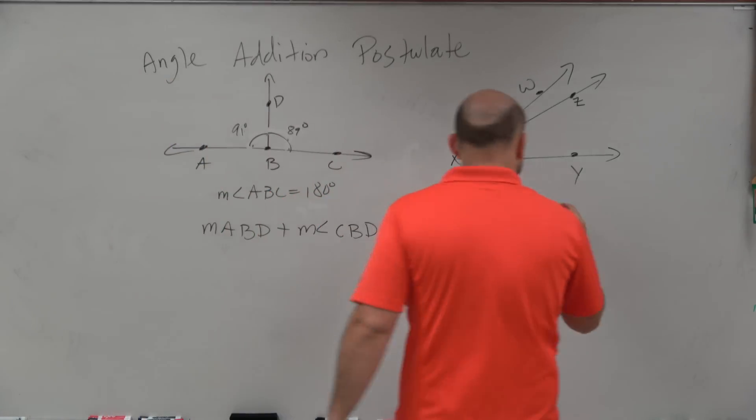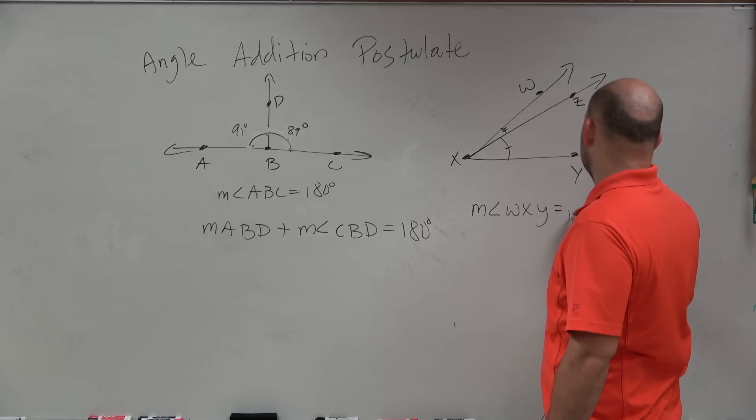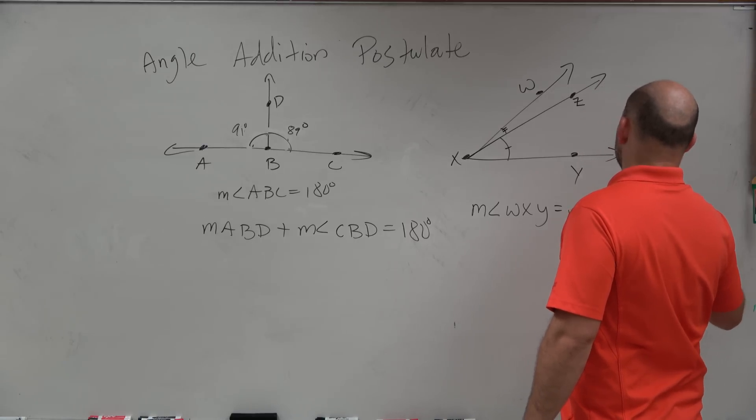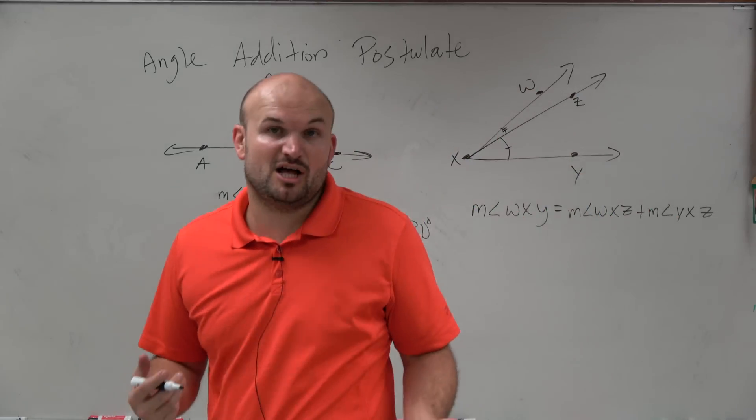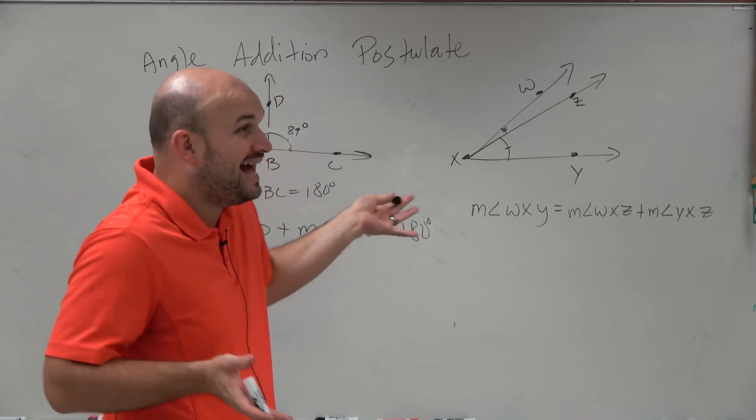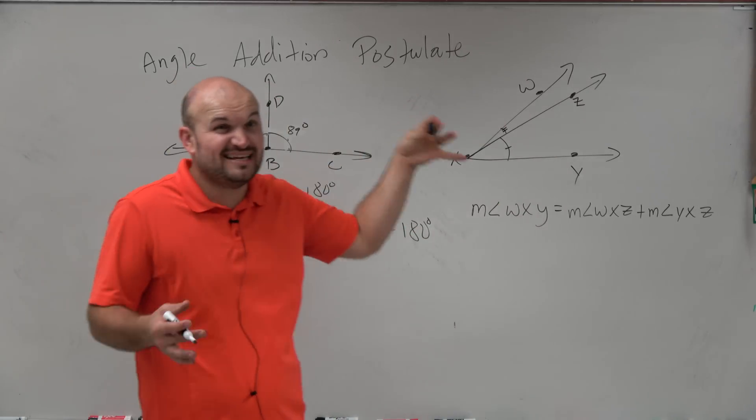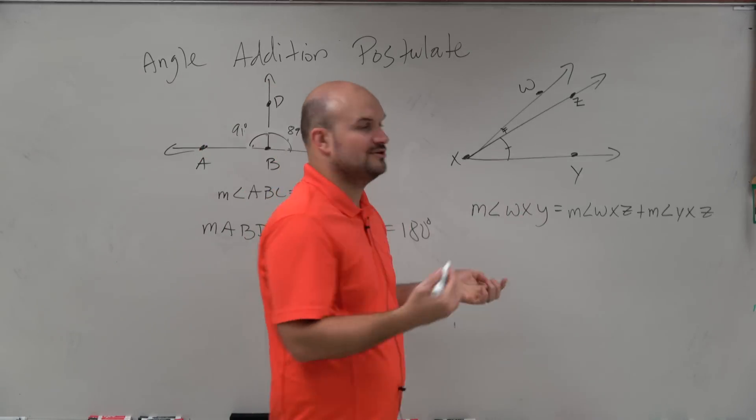Well, they're related because the sum of these two smaller angles, which we can say measure of angle WXZ plus the measure of angle YXZ, those have to equal the sum of my larger angle. Because as you notice what I just did, I didn't change the measurement of this angle. Just like I didn't change the measurement of this angle. All I did was break it apart, right? And we're technically usually going to be doing this with two angles.